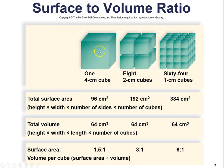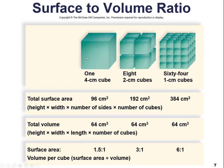To illustrate this: take one four-centimeter cube, then divide that same cube into eight two-centimeter cubes, or 64 one-centimeter cubes. The surface area increases dramatically when you divide it into 64 smaller cubes, while the total volume stays the same. Looking at the surface area to volume ratio, the single large cube has a ratio of 1.5 to one, while the smallest cubes have six to one.